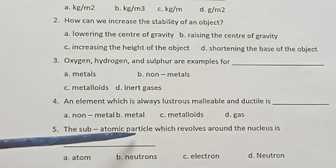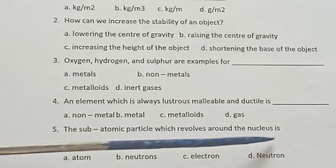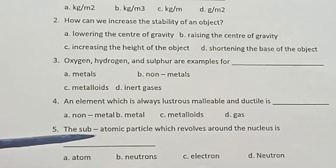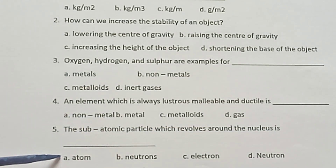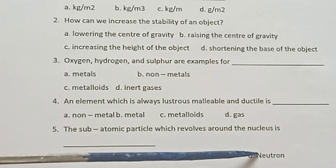Fifth one: The subatomic particles which revolve around the nucleus is dash. Options: atom, neutrons, electron, neutron.